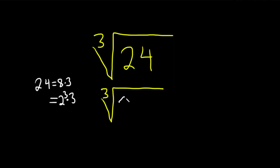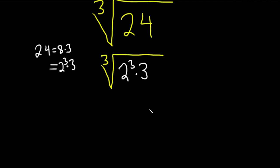Let's come over here and replace it with that. We have 2 cubed times 3. And now we can take the cube root of both factors. So this is the cube root of 2 cubed times the cube root of 3.